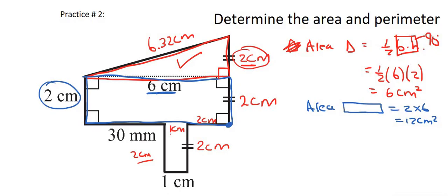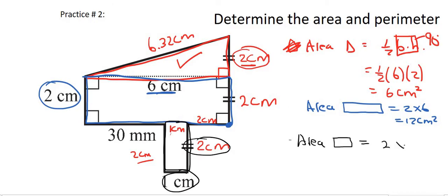Then lastly, we need to do this little guy down here. And so that's the area of the small, triangle, I mean rectangle. And that's going to be this length multiplied by this length. So that's going to be 2 multiplied by 1.